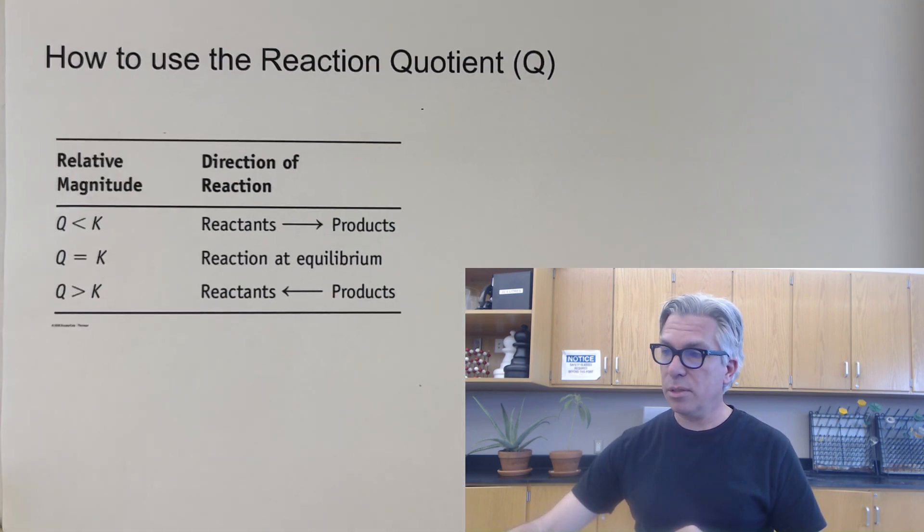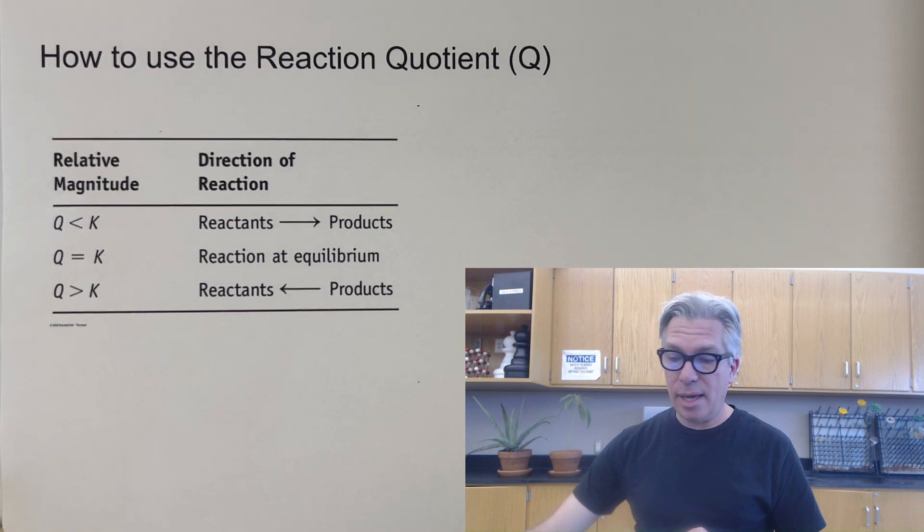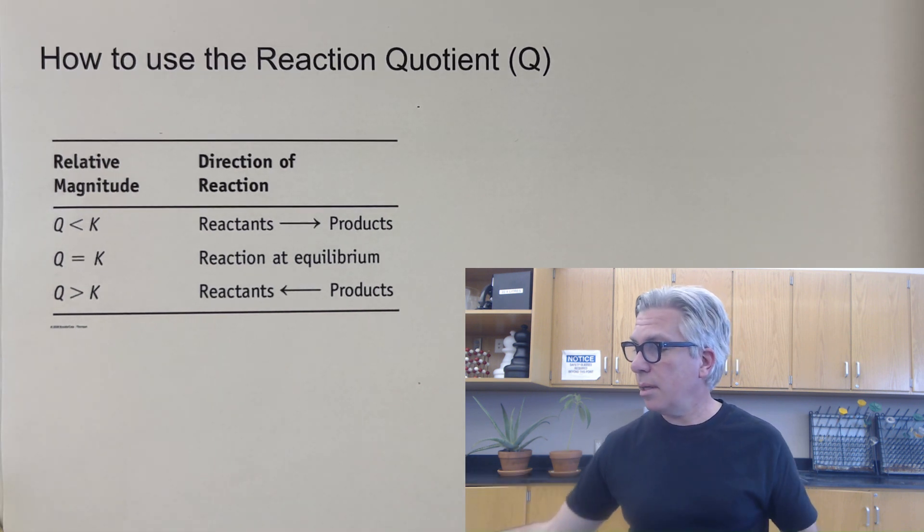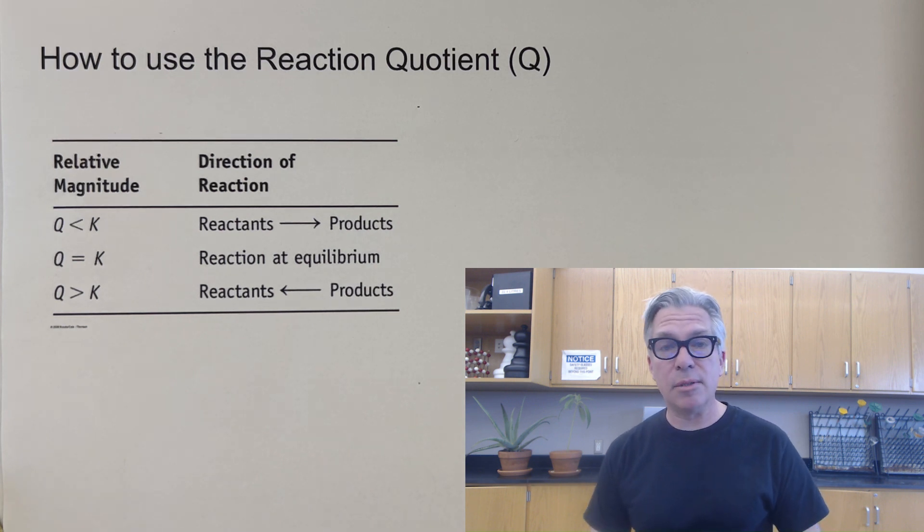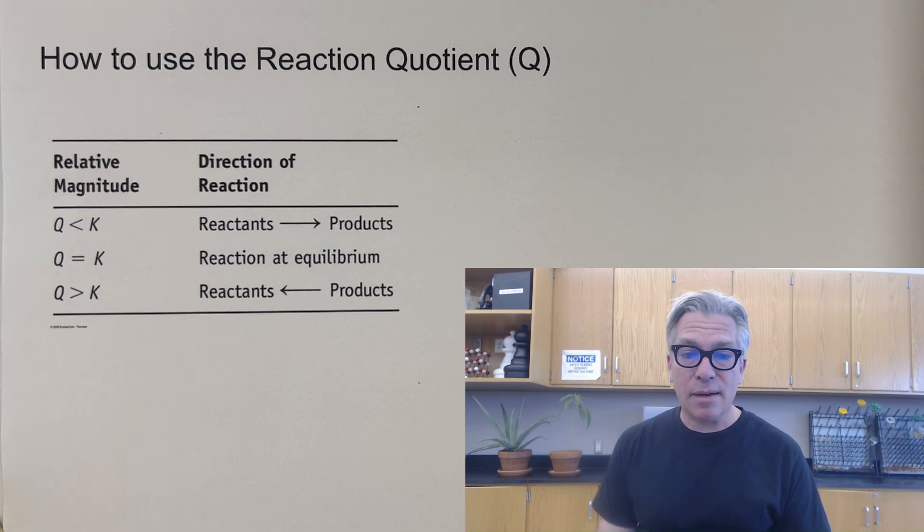So if you're ever asked if a system is at equilibrium and you're given some current conditions, just plug them in, see what you get, and make your judgment call on that. We'll end with a quick look at the table one more time. And I hope you find that helpful. And if you ever have any questions that you'd like me to answer or solve, feel free to send them to me in the comments or otherwise. In the meantime, happy solving and have a great day.